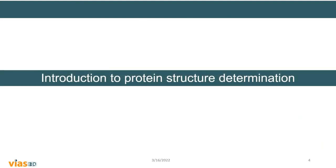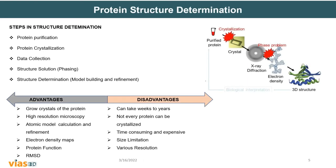Coming to the introduction to protein structure determination: there are a series of steps involved in determining protein structure. For X-ray crystallography, you purify the protein, crystallize it, collect data, go through phasing, and then proceed to model building and refinement. Electron density maps are produced during this process, and the 3D structure is ultimately predicted.